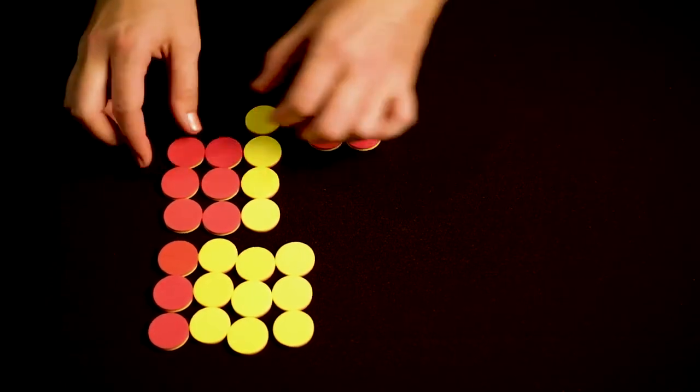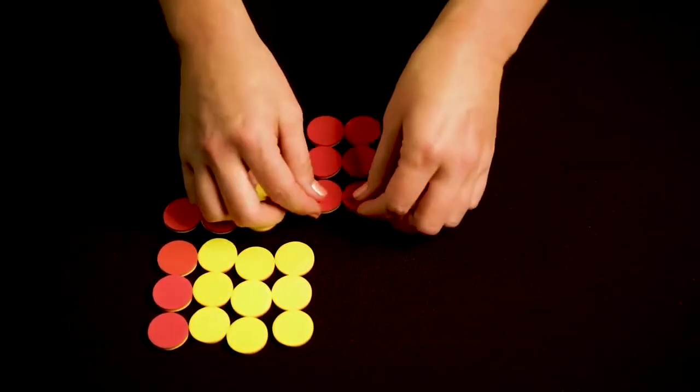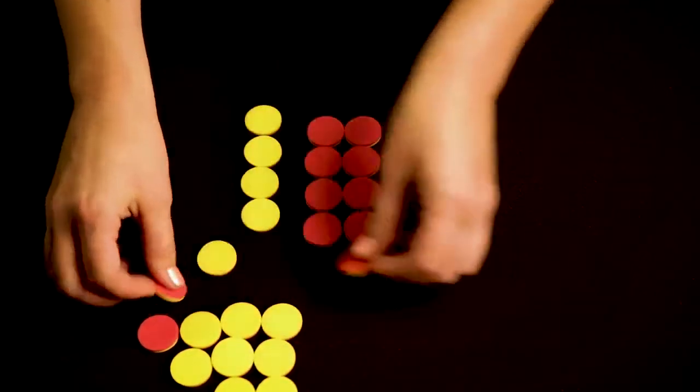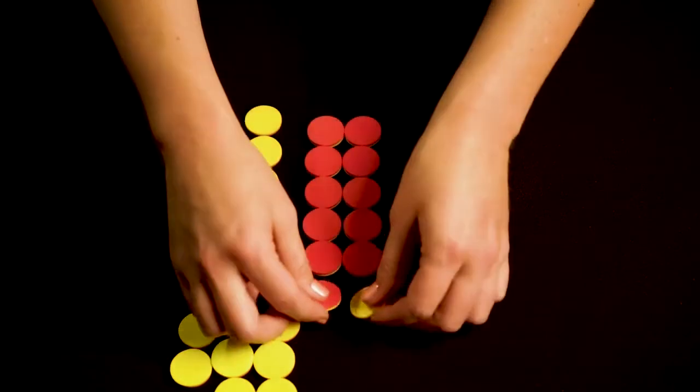I'm going to make 1, 2, 3, 4, 5, 6, 7, 8. Scoop those to the side. 9, 10, 11, 12.